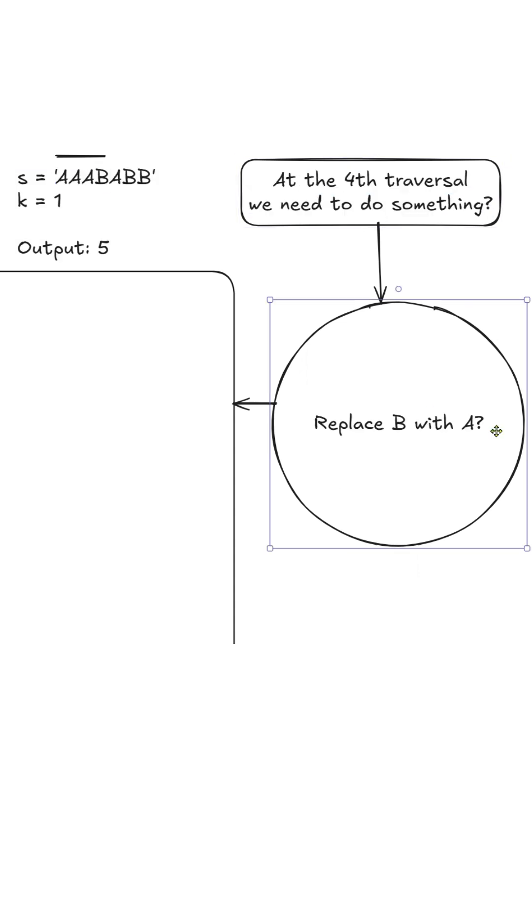Would we choose to replace the single B with an A because A is the majority? Or would we choose to find a substring that can accommodate k replacements?